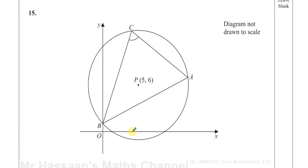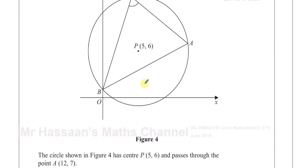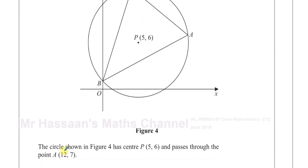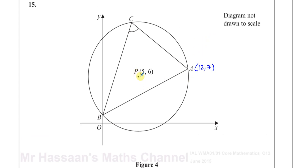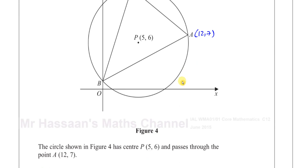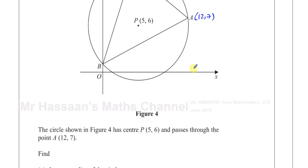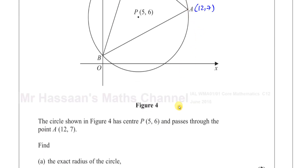The diagram shows a circle with a triangle inside it, and the center of the circle is marked P(5,6). As it says, the circle shown in figure 4 has center P(5,6) and passes through the point A, which is (12,7). So we know that's the center, we know that's a point on the circumference A — the circle passes through the point (12,7).